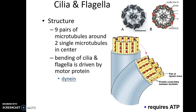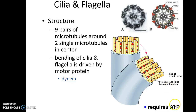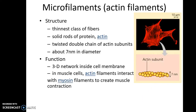Cilia and flagella have a specific microtubule arrangement called the nine plus two arrangement — nine pairs of microtubules arranged at the periphery with two microtubules in the center. The bending of cilia and flagella is made possible by the motor protein dynein, which requires ATP. This structure shows a pair of dyneins which help in the bending of cilia and flagella.